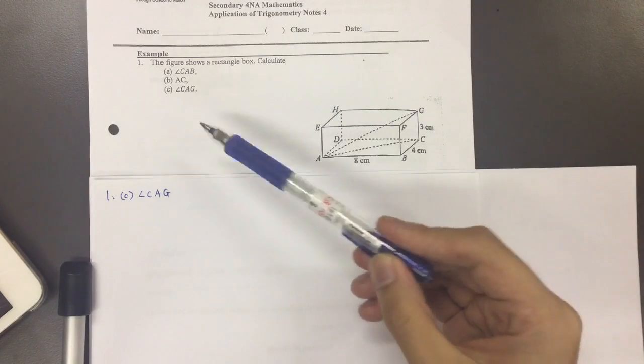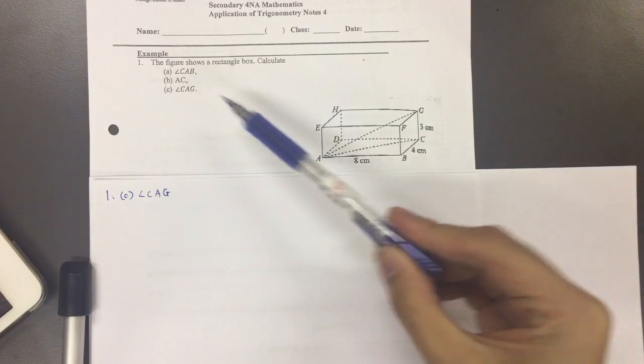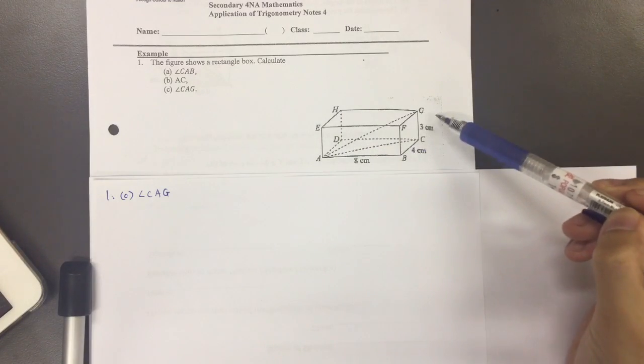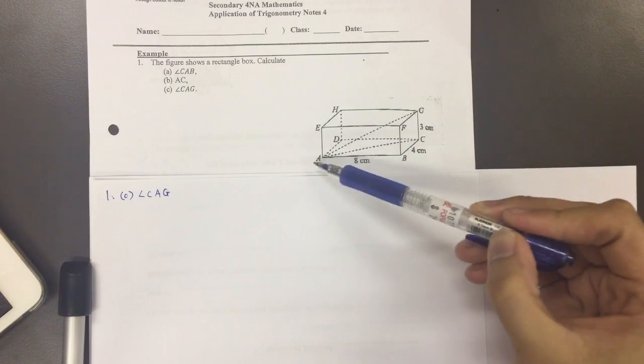Alright, so now for the final question to find angle CAG. So where exactly is CAG? C, A, G.